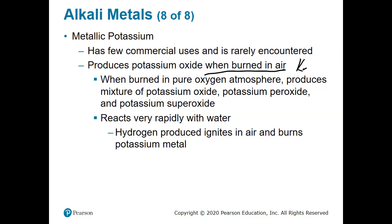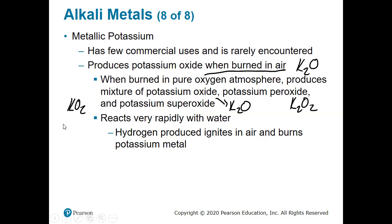Potassium oxide (K₂O) is probably the most common form. If we burn in pure oxygen, we can get a mixture of potassium oxide K₂O, potassium peroxide K₂O₂, or potassium superoxide KO₂. Superoxides are two oxygen atoms with a negative one charge, as opposed to a negative two or negative four — pretty rare and kind of different in that regard.